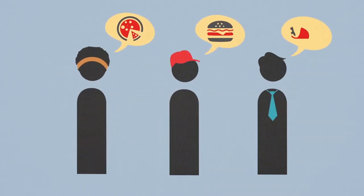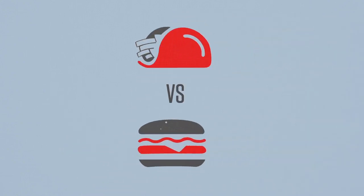All three of you immediately call out a different preference, so there's no clear majority in favor of any option. But all of you want equal say in the decision about where to eat, so you propose voting on two options at a time to figure out what the group's preferences are. So you first say: tacos versus burgers — which do you guys want?